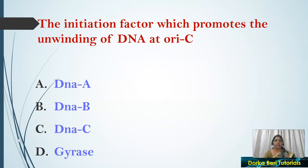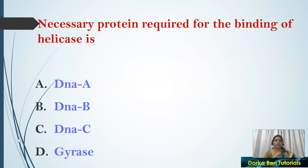Next question: The initiation factor which promotes the unwinding of DNA at the oriC site — which initiation factor is needed? Options: DNA A protein, DNA B, DNA C. The answer is DNA B protein. DNA B factor is required for the unwinding at the oriC site, and DNA B is also known as a helicase.